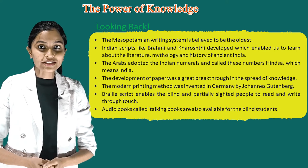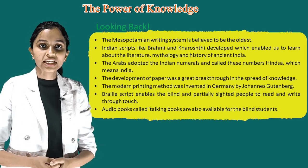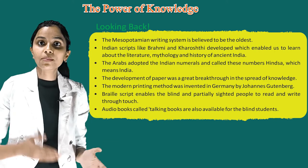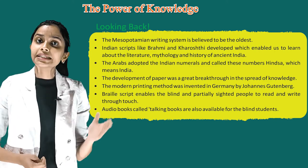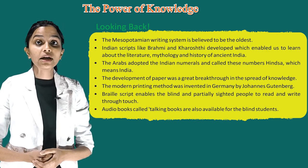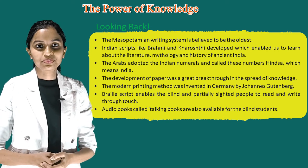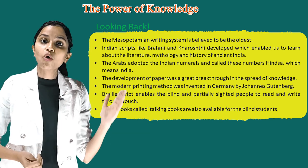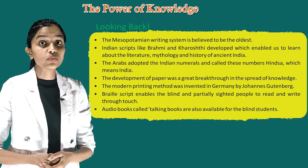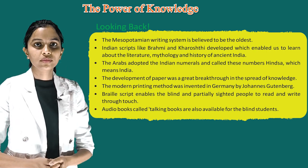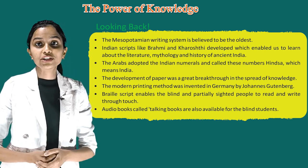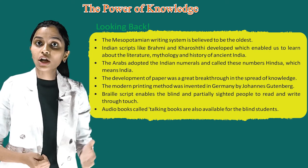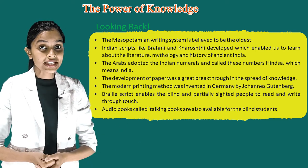Recap: The Mesopotamian writing system is believed to be the oldest. Indian scripts like Brahmi and Karosti enabled us to learn about ancient India's literature, mythology, and history. The Arabs adopted Indian numerals. The development of paper was a great breakthrough in the spread of knowledge. The modern printing method was invented in Germany by Johannes Gutenberg. Braille script enables the blind and partially sighted to read and write through touch, and audio talking books are also available.